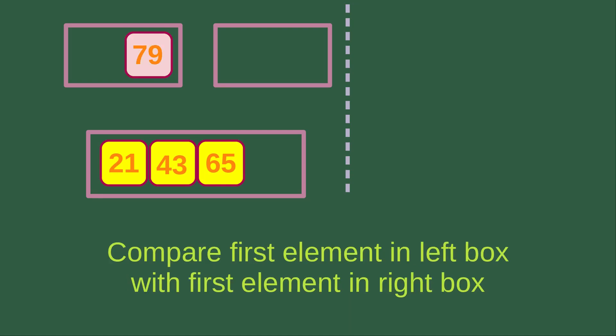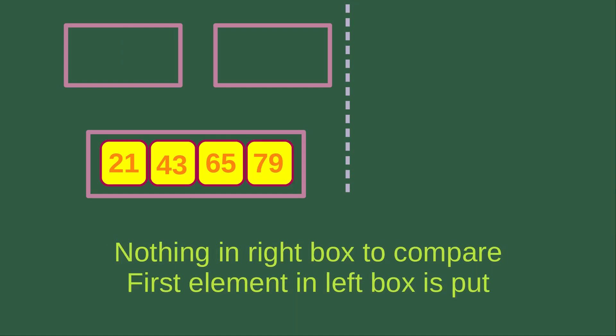Then we compare again: the first element in the left box is 79, and the right box has nothing. So we have nothing in the right box to compare with, and we just put 79 into the merging box.